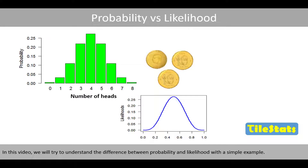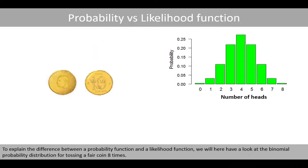In this video we try to understand the difference between probability and likelihood with a simple example. To explain the difference between a probability function and a likelihood function, we will have a look at the binomial probability distribution for tossing a fair coin eight times.